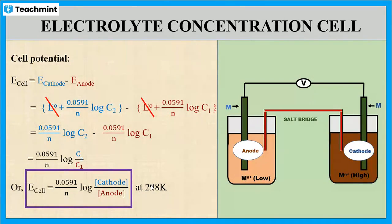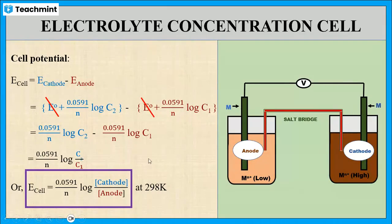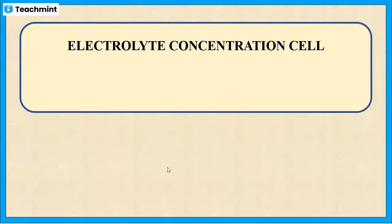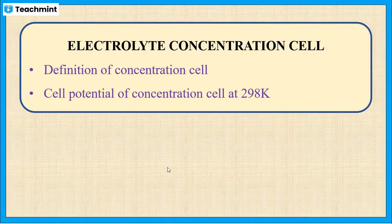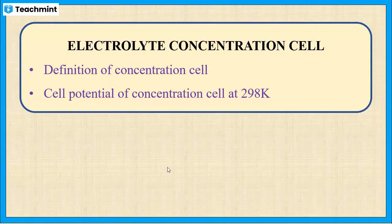By using this expression, we can determine the E cell of the concentration cell. Overall, we discussed the definition of the concentration cell and the cell potential of the concentration cell at 298 K.